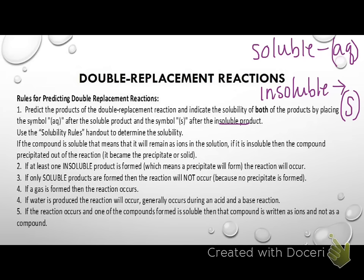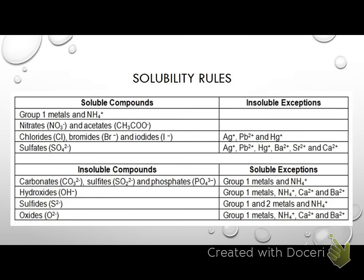The way you're going to read this solubility chart: the top part lists things that are soluble unless they are with one of the listed exceptions. Group 1 metals and ammonium, all nitrates and acetates have no exceptions — so they are always going to be soluble, always AQ. If you have chlorides, bromides, or iodides, you would write AQ unless it's with silver, mercury, or lead — then you would write S, because it makes a solid. Same thing for sulfates. If you look at the bottom, these are always going to be insoluble — write S behind them unless they're with one of the exceptions, which are mostly group 1 metals and ammonium.